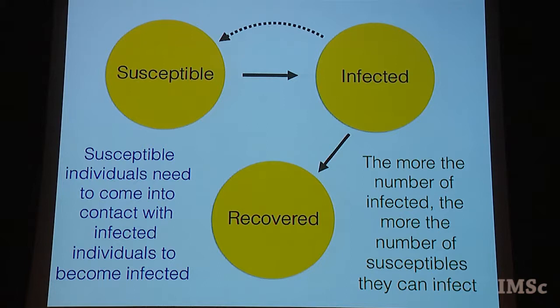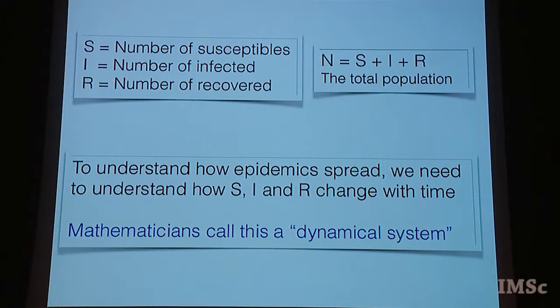We know that infected people can alter the rate at which susceptible people become infected. Susceptible individuals need to come into contact with infected individuals to become infected — the more the number of infected, the more susceptibles they can infect. So far we have been making this argument completely in words, through reasonable but hand-waving arguments about the nature of the interaction between susceptible, infected, and recovered.